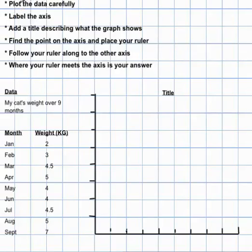Okay, in this video I'm going to look at line graphs, how to make a line graph, and we're going to plot the data, we're going to label the axis, and we're going to find the point on the axis and place your ruler, follow the ruler along the other axis, and where your ruler meets the axis is your answer.